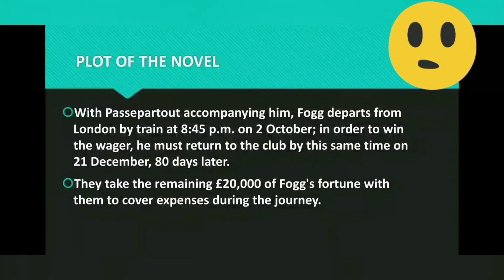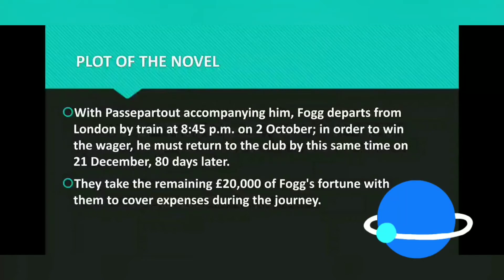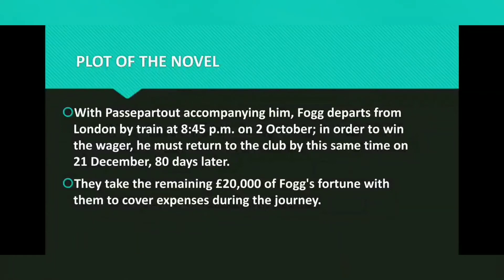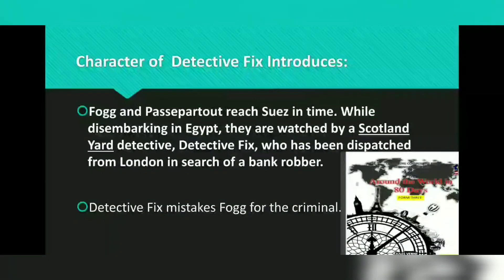After hiring Passepartout, they depart from London by train at quarter to nine on the second of October in order to win the wager. Fogg must return to the club by this same time on 21st December, 80 days later. They take the remaining 20,000 pounds of Fogg's fortune with them to cover expenses. Fogg and Passepartout reach Suez in time, and while disembarking in Egypt they are watched by Scotland Yard Detective Fix.